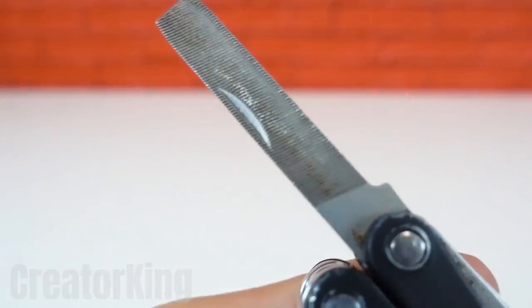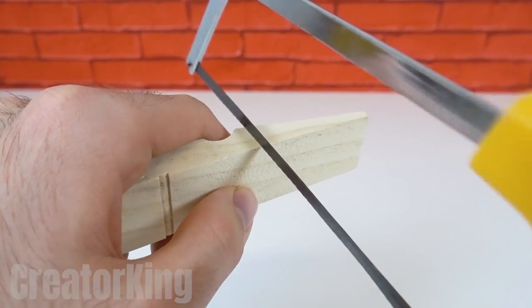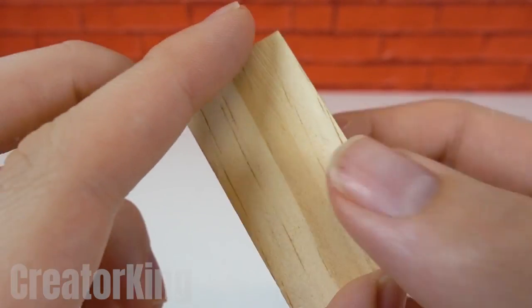Separate one half of the last giant clothespin and with a tool you have on hand sand any imperfections. And then cut off the narrow end with a saw to obtain another triangle.